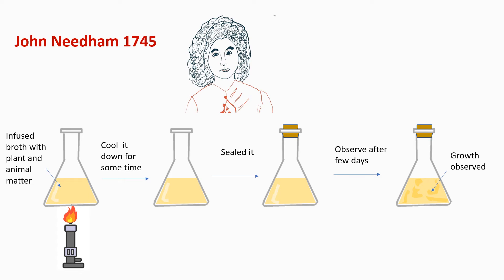In 1745, John Needham, an English biologist, did yet another experiment. He took a broth in a flask and infused it with plant and animal matter, then boiled the broth — though he did not boil it for sufficient time. He then sealed the flask and left it for a few days. He observed cloudy growth in the flask and supported the spontaneous generation theory with this experiment, and his companions also believed him. In reality, he had not boiled the broth long enough to kill the microorganisms present.